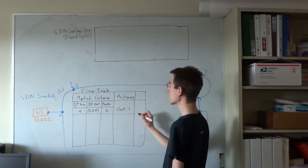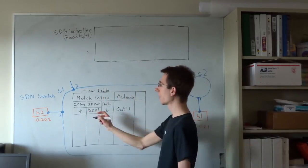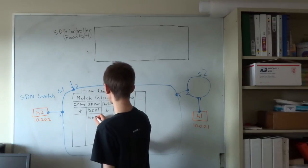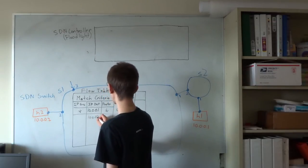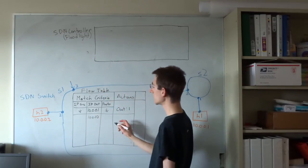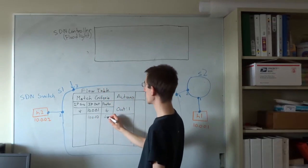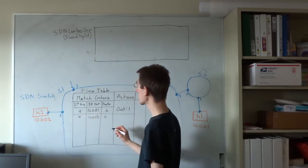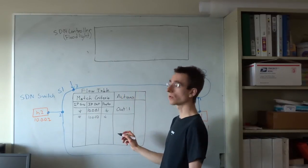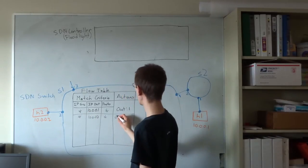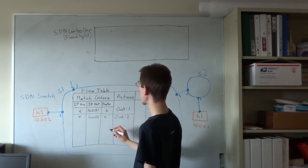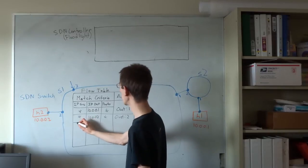We can install a similar entry for host 2. Again, we'll specify that the destination is 10.0.0.2, we won't specify an IP source or protocol, and we'll specify an action of sending out port 2.